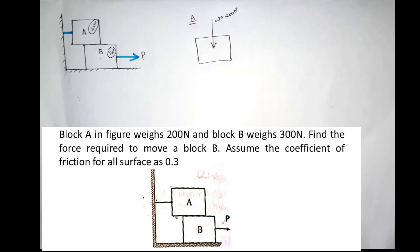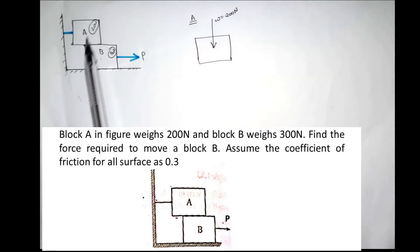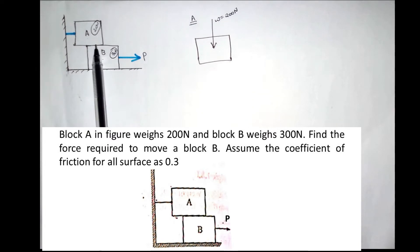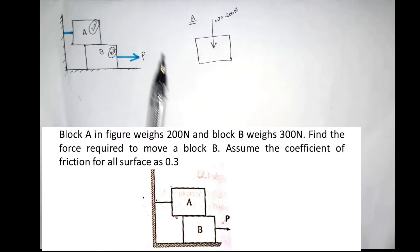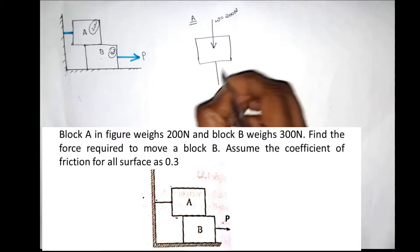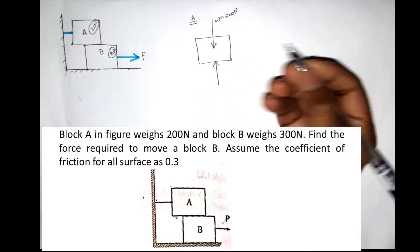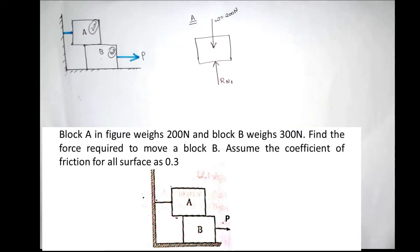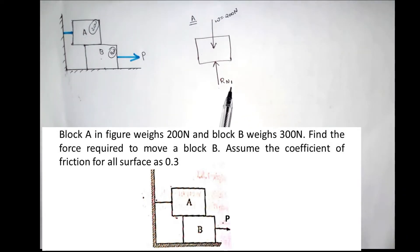W equals 200N acting downward. The surface produces a reaction. Block A touches the surface, and there is a normal reaction perpendicular to the surface, written as Rn1.